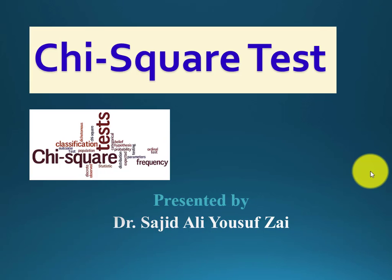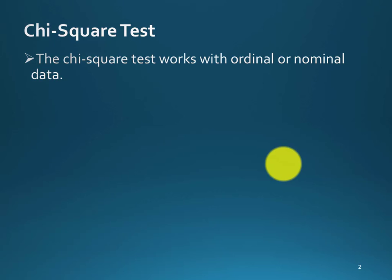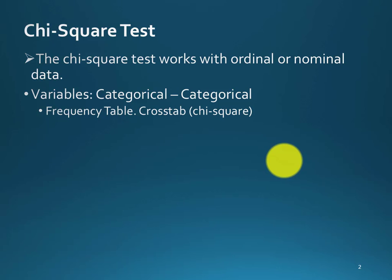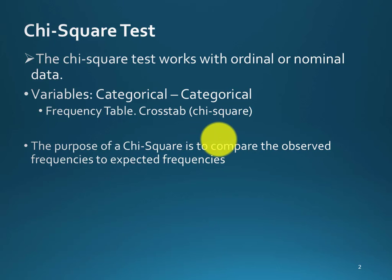Hi everyone, today I'll talk about the chi-square test. The chi-square test basically works for ordinal or nominal types of data. When a researcher has categorical type of data, he or she can use the chi-square test. In chi-square, both variables — and more than two variables — can be categorical.